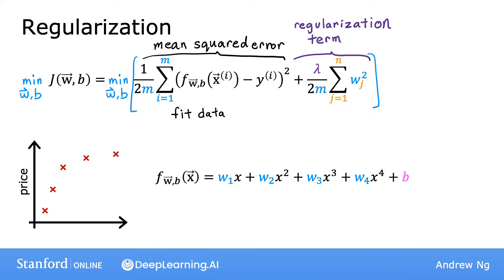And trying to minimize the second term, the algorithm also tries to keep the parameters wj small, which will tend to reduce overfitting. The value of lambda that you choose specifies the relative importance or the relative trade-off or how you balance between these two goals.